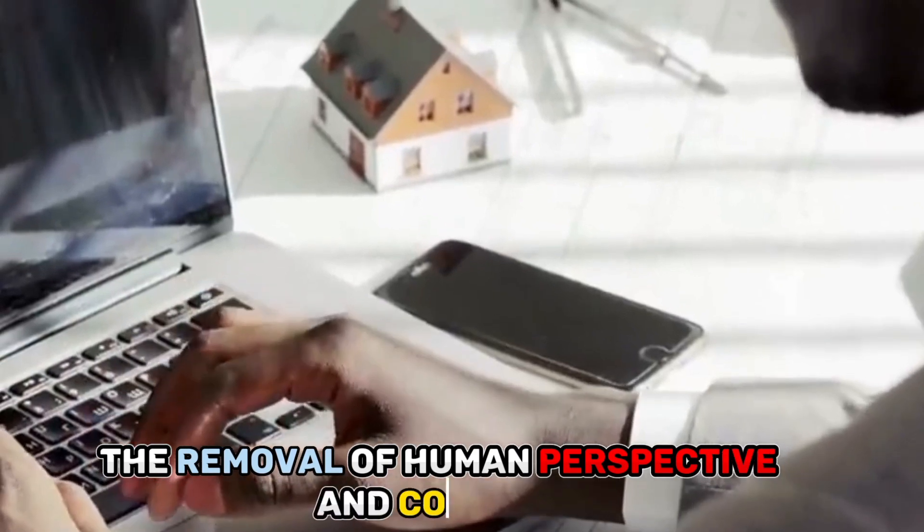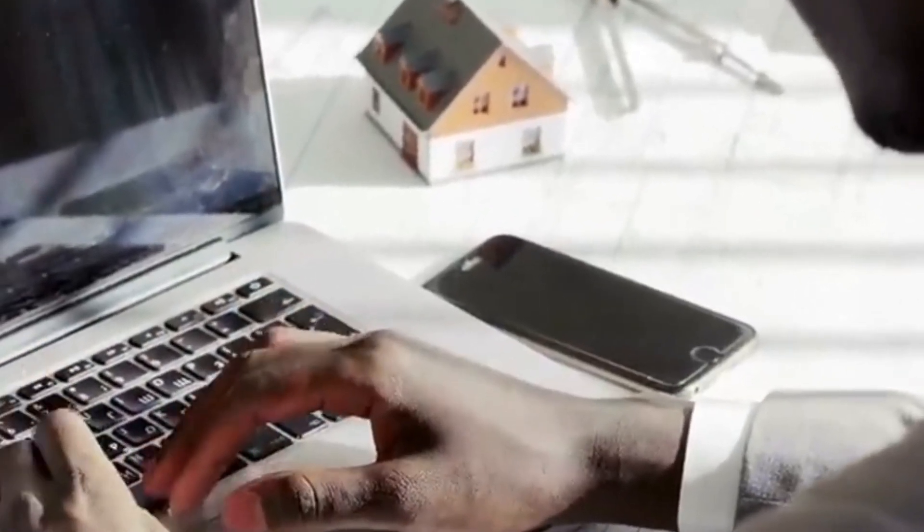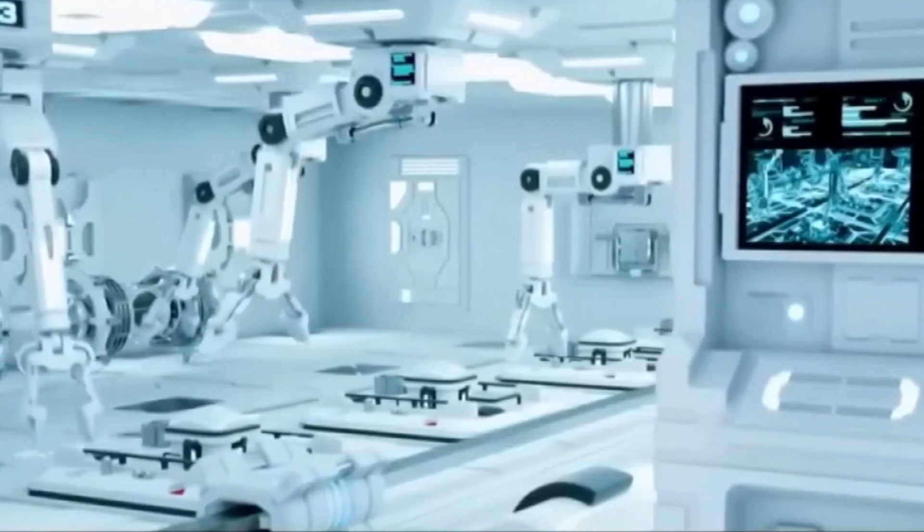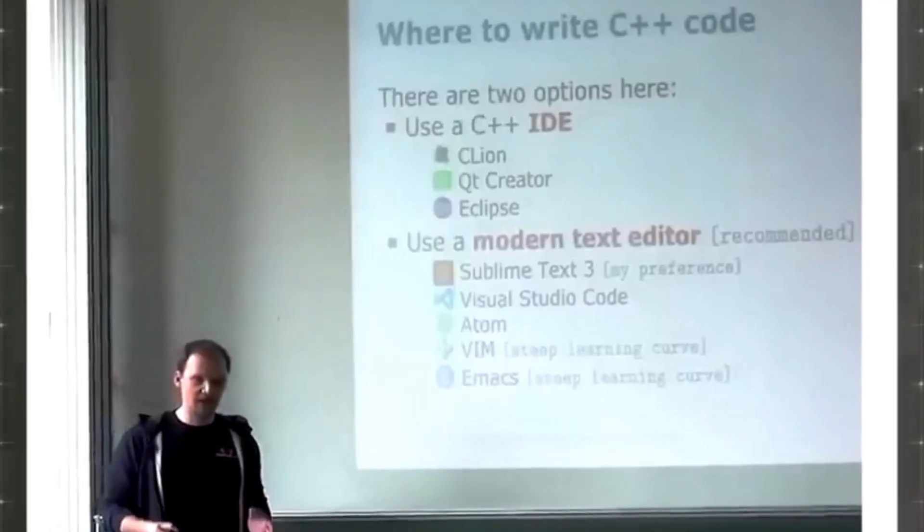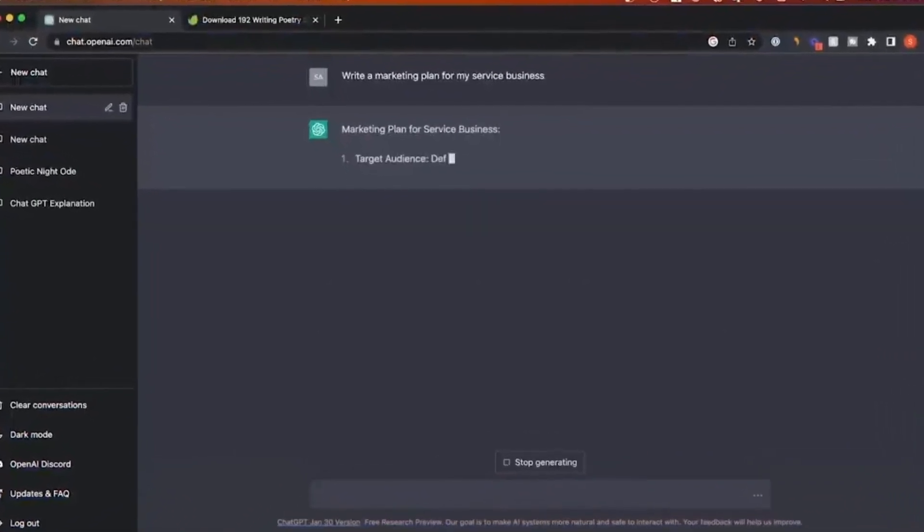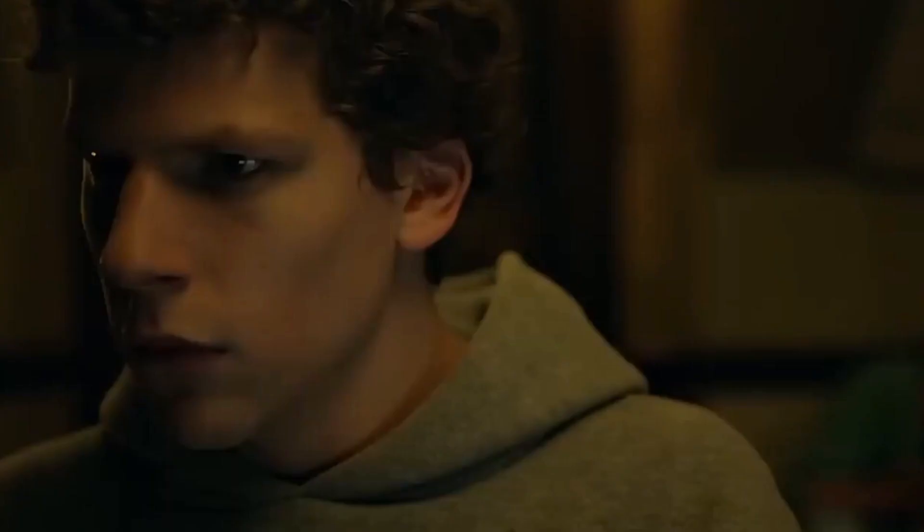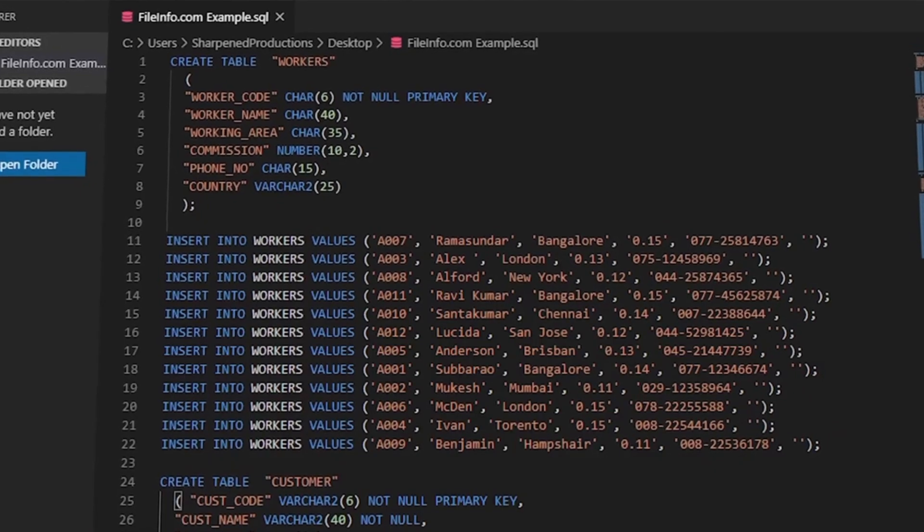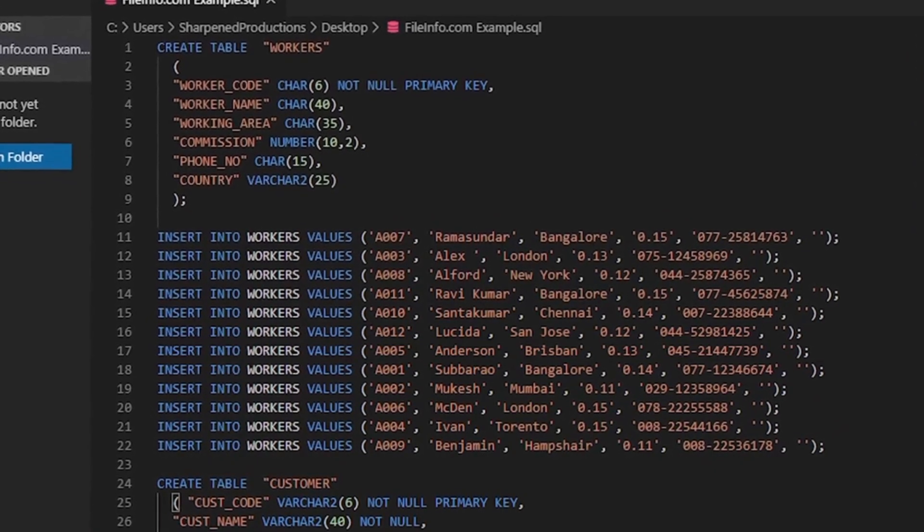The removal of human perspective and context. Understanding complicated business objectives, user needs, and ethical issues that go beyond the boundaries of code itself is frequently required when it comes to programming. Even though it is quite good at working with code, the ChatGPT code interpreter does not have the capability of understanding the bigger picture. Programmers run the danger of missing important insights when they rely solely on the interpreter, which can result in poor solutions that are unable to address the issues of the real world in their entirety.